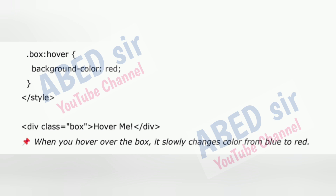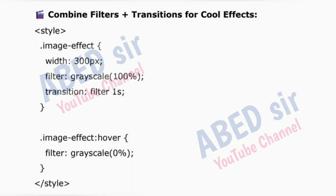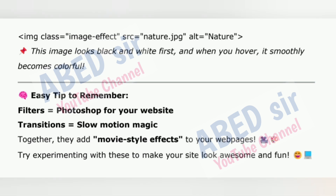Combine filters and transitions for cool effects: .image-effect { width: 300px; filter: grayscale(100%); transition: filter 1s; } .image-effect:hover { filter: grayscale(0%); } — this image looks black and white first, and when you hover, it smoothly becomes colorful. Easy tip: Filters = Photoshop for your website; Transitions = slow motion magic. Together, they add movie-style effects to your web pages. Try experimenting with these to make your site look awesome and fun.